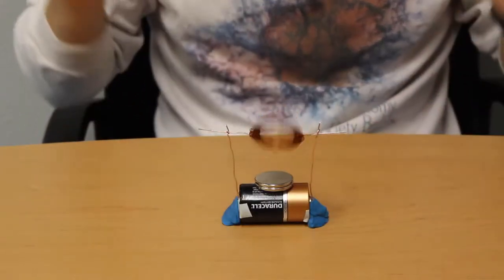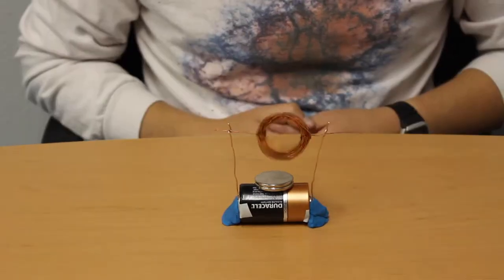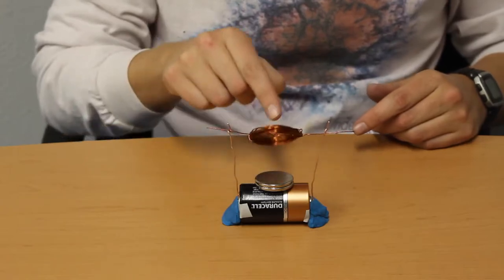Place a magnet on the battery and give the coil a spin. It will either continue to spin, turning electrical energy into mechanical, or oppose the spin due to the direction of current flow. It might be weird, but that's science!